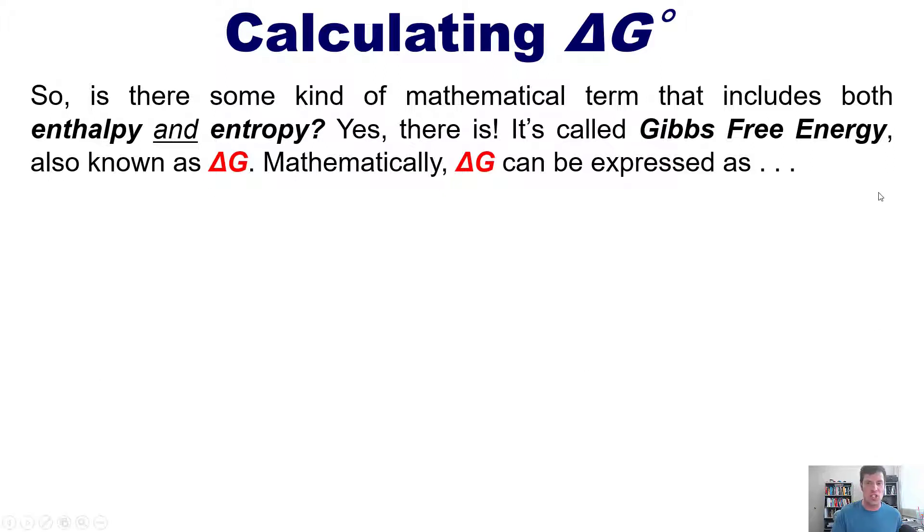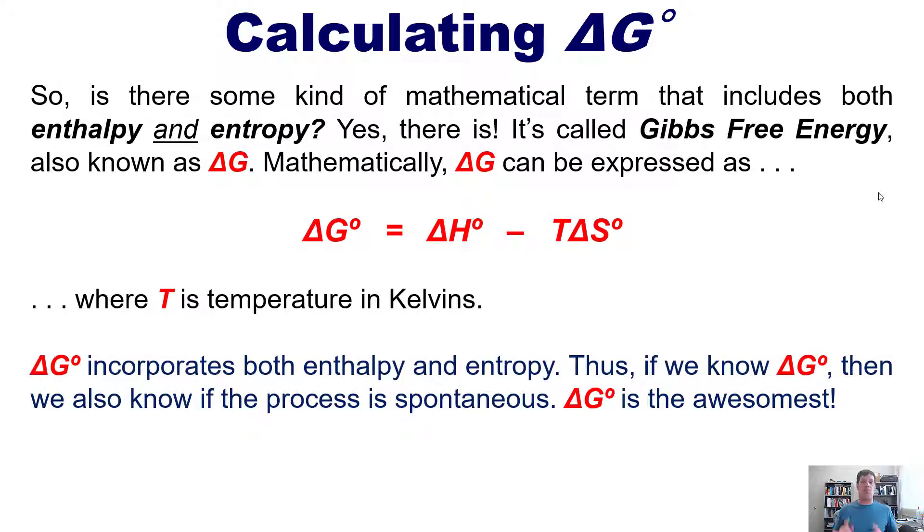Mathematically, delta G can be expressed by using this equation, where T is temperature in Kelvins. Now as you can see in this equation, delta G incorporates both enthalpy and entropy. Thus, if you know delta G, then you also can automatically know if the process is spontaneous or not, regardless of what delta H or delta S are, because delta G incorporates both of them.